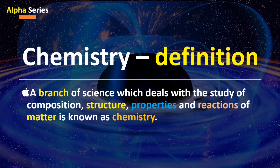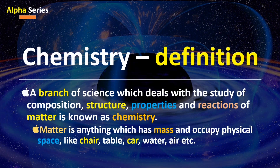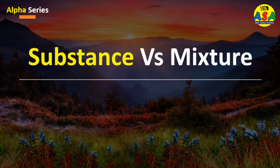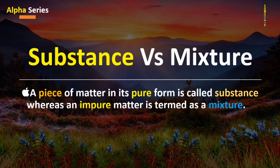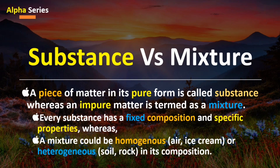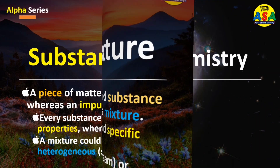Chemistry revolves around matter, its different characteristics and properties. Matter is anything which has mass and occupies physical space, like a chair, table, car, water, air, etc. It is found in four different states: solid, liquid, gas, and plasma. A piece of matter in its pure form is called a substance, whereas an impure matter is termed a mixture. A mixture could be homogeneous like air or ice cream, or heterogeneous like soil, rock, or wood.